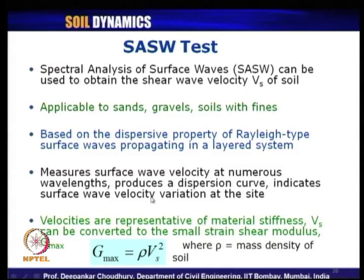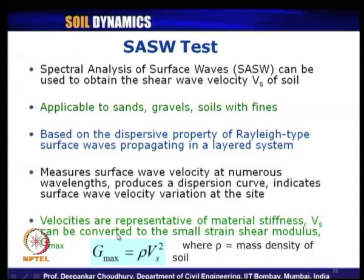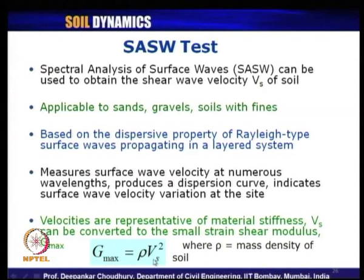The Rayleigh wave velocity is finally used to obtain V_s. These velocities are representative of material stiffness — if the V_s value is lower than another material, it automatically means the stiffness of that material is lower. It can be converted to obtain the small strain shear modulus, expressed as G_max (maximum shear modulus). G_max is given by rho times V_s squared, where V_s is the shear wave velocity and rho is the mass density of the soil material.